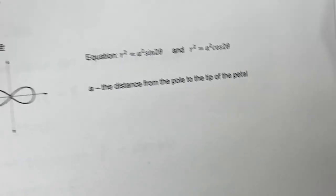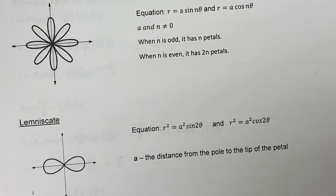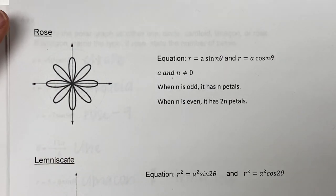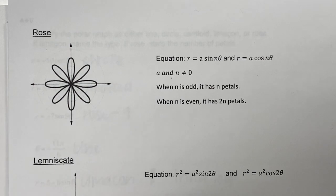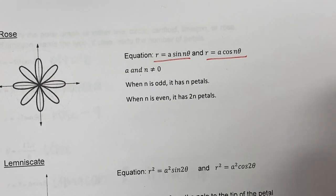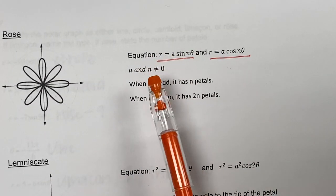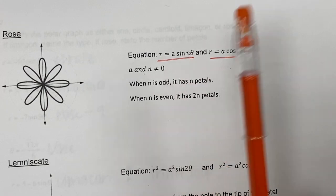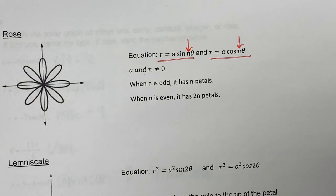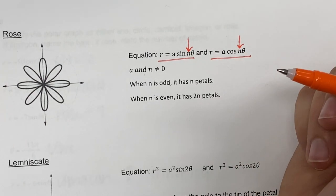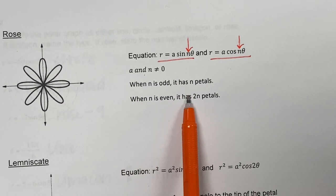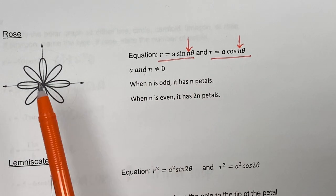Let's leave limaçon. The next two are my favorites because they're the easiest to identify. Rose—it's a flower, fun! The two equations are here and here. It's easy to identify rose because there is no adding or subtracting, just a number times sine or cosine of n theta. This little n is specific to rose, and that number tells us the number of petals. If n is an odd number like three, that's how many petals it has.